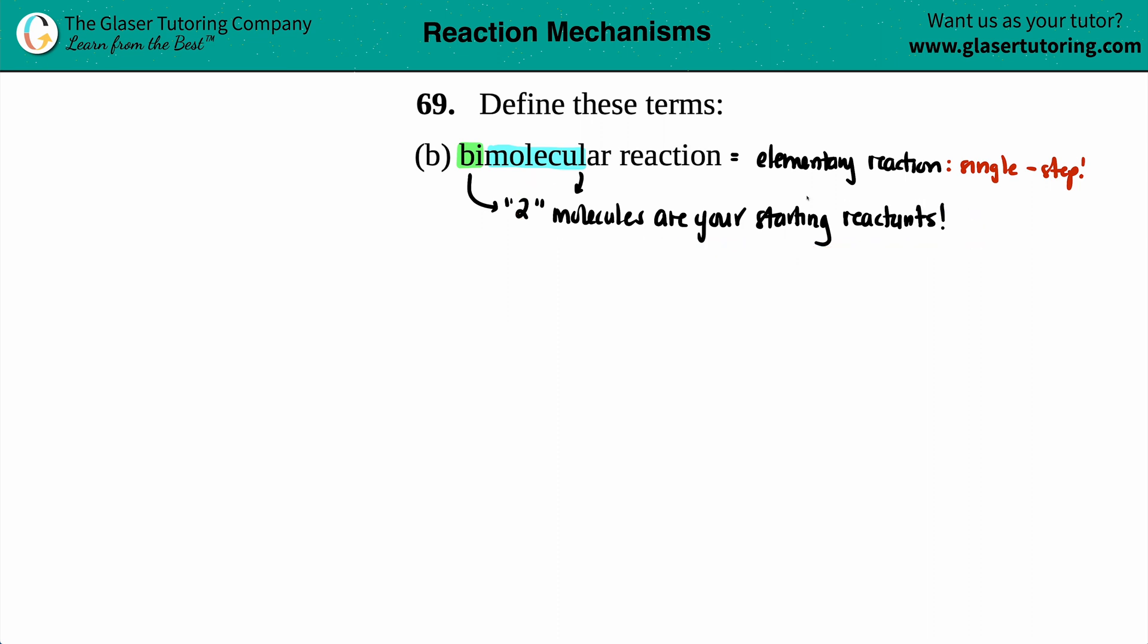You can see this with two examples. One example is if you have maybe two individual compounds or elements coming together. A plus B might yield AB. Here's my one reactant, here's my other reactant, and then you're good to go.